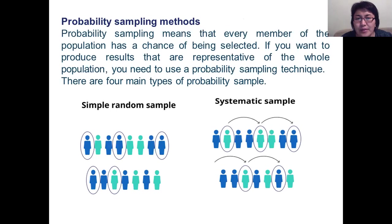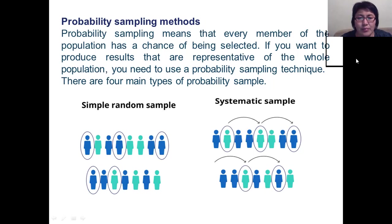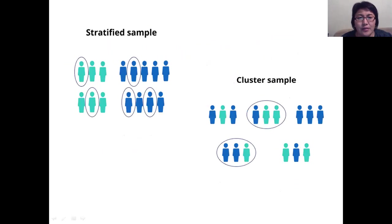Probability sampling methods. Probability sampling means that every member of the population has a chance of being selected. If you want to produce results that are representative of the whole population, you need to use a probability sampling technique. There are four main types of probability sample: simple random sample, systematic sample, stratified sample, and cluster sample.